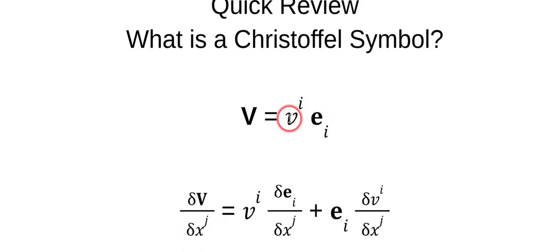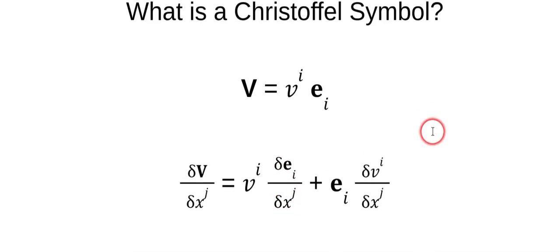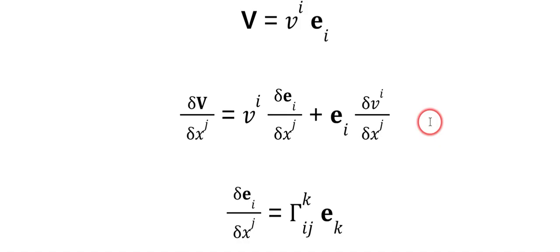Since this is a function of two variables we have to use the product rule: first times derivative of the second plus the second times derivative of the first. And we have this thing, the partial derivative of a basis vector with respect to a coordinate.